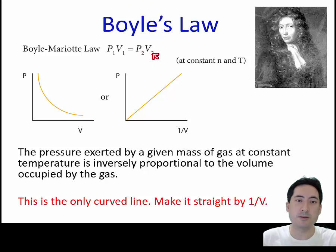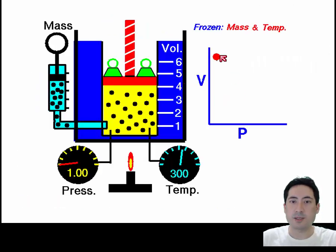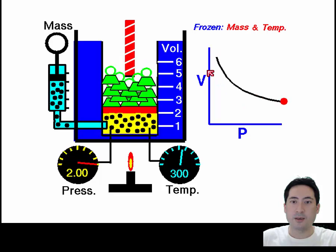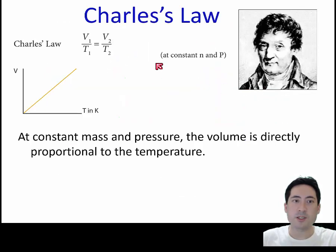So Boyle's law is represented by this equation here: P₁V₁ equals P₂V₂. Pressure and volume in one circumstance will be equal to the pressure and volume in a second circumstance. Here's a diagrammatic representation of that.